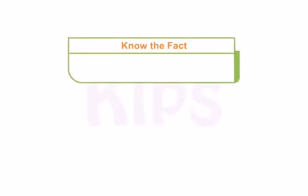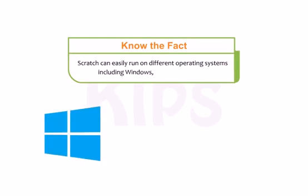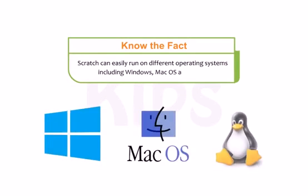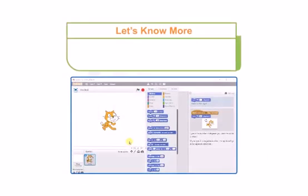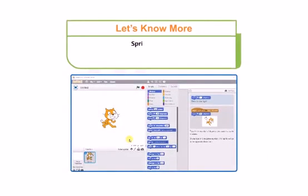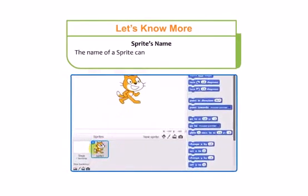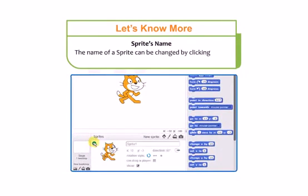Scratch can easily run on different operating systems including Windows, Mac OS, and Linux. The name of a sprite can be changed by clicking inside the box that displays the sprite's name.